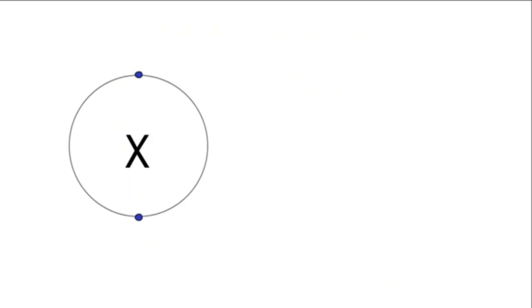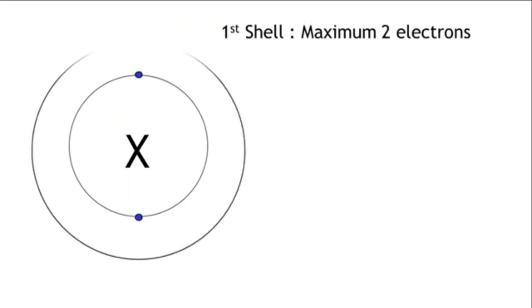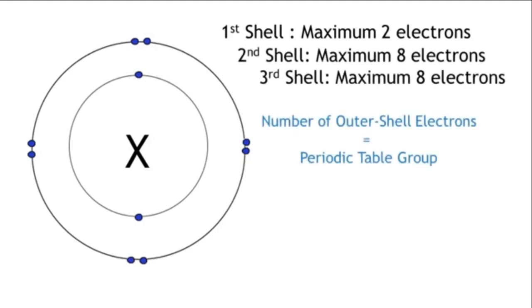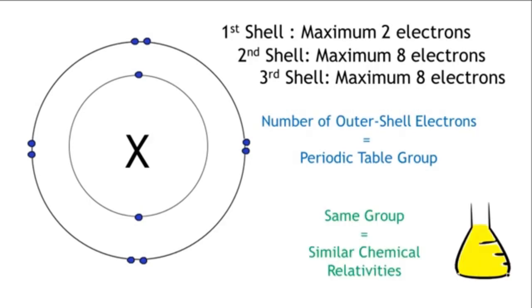So, electrons are arranged in shells or energy levels around the nucleus. Each energy level has a maximum number of electrons it can hold. The lowest energy level is always filled first — it can only hold two electrons, while the levels after this can hold a maximum of eight electrons. The number of electrons in the outer shell of an atom determines which group the element belongs to on the periodic table, and elements in the same group have similar reactivities.